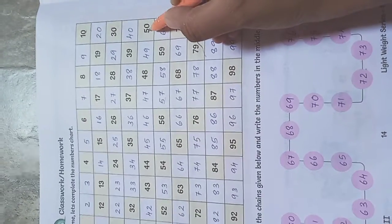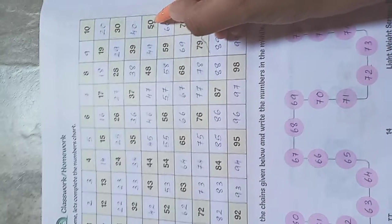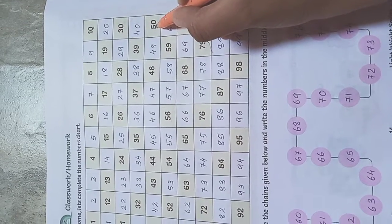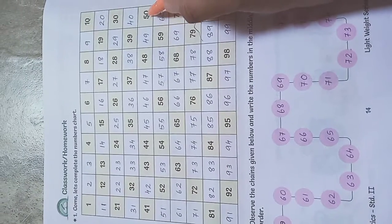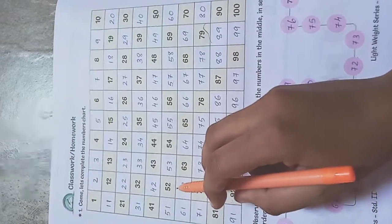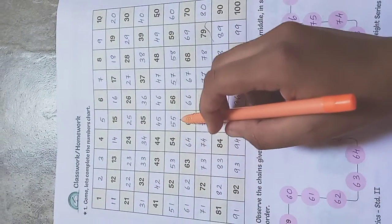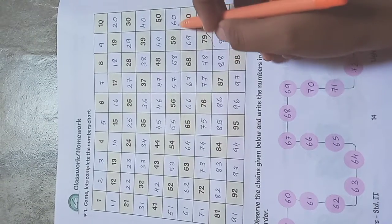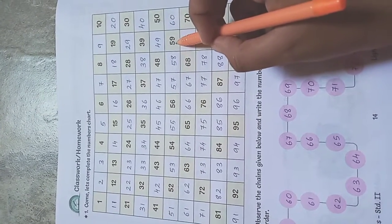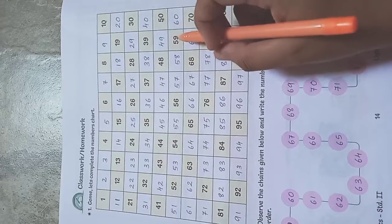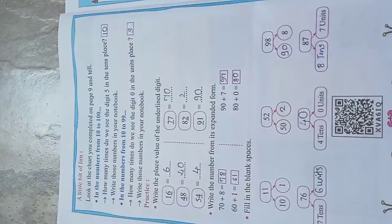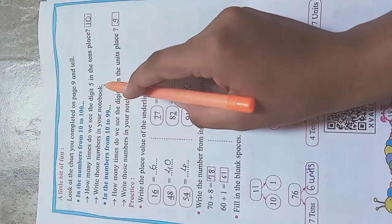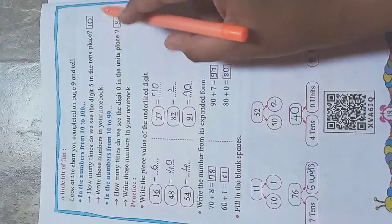The tens place is the first position, and units place is the second. So how many times can we see the digit 5 in the tens place? We count: 1, 2, 3, 4, 5, 6, 7, 8, 9, and 10. That's 50 to 59 — there are 10 numbers. Write those numbers, 50 to 59, in your notebook.